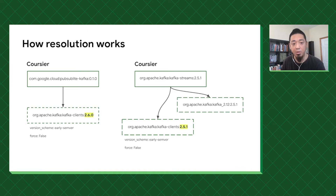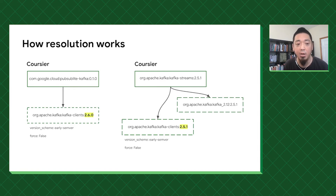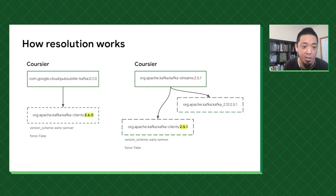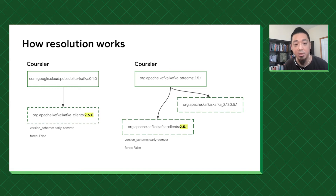Here's a rough overview of how the resolution works. There are two kinds of dependencies: the ones in solid lines are direct dependencies, whereas the ones in dotted lines are transitive dependencies picked up as dependencies of dependencies. The initial resolution is done using Coursier, which forms a mini-graph of all the direct dependencies in the build-ish file. For example, Kafka 2.6 and Kafka 2.5 might both be picked up — that's a dependency conflict where you have the same module but two different versions.